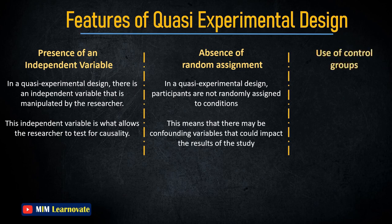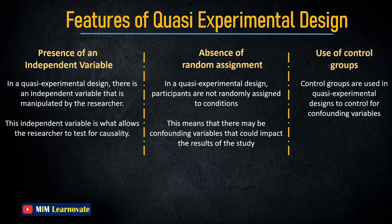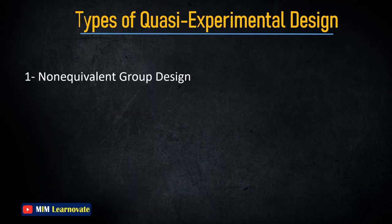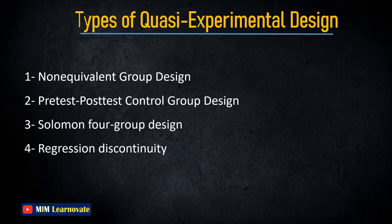Control groups are used in quasi-experimental design to control for confounding variables. Types of Quasi-Experimental Design include: Non-Equivalent Group Design, Pre-test Post-test Control Group Design, Solomon 4-Group Design, Regression Discontinuity, and Natural Experiment. Let's study them in detail.